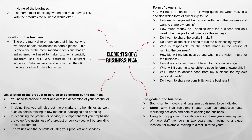Elements of a business plan: the name of the business must be clearly written and must have a link with the products the business would offer. For example, if you have a carpentry business, there is no point naming it 'Chocolatiers' — it makes much more sense to name it around carpentry, as that is the product you offer.